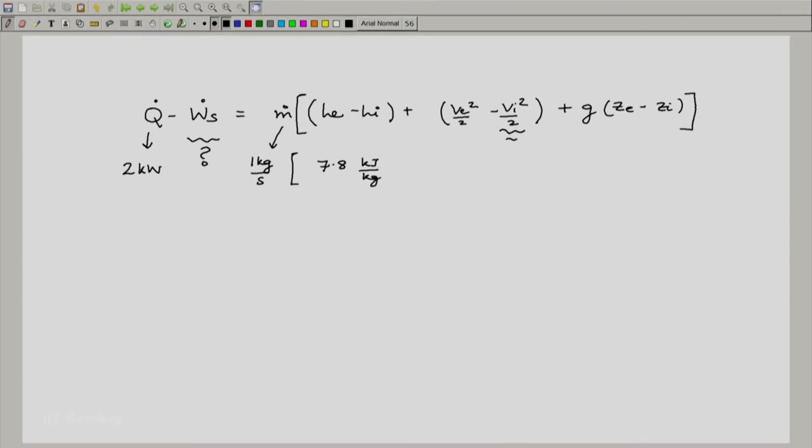Here, this is negligible, so V e squared by 2 minus V i squared by 2 is nothing but V e squared by 2 and we found that this is 0.672 kilojoule per kg and G z e by z i we found out was 0.196 kilojoule per kg and luckily we are just multiplying this by 1 here.